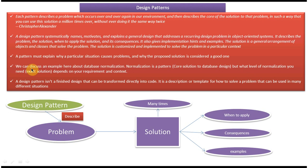We can take the example of database normalization. Normalization is a pattern — it is the solution for database design. There are different kinds of normalization forms: form 1, form 2, and so on. Which level of normalization you want to use in your application depends on your requirement and context. This pattern just explains the problem and the solution; which one you have to use is up to your requirement and context.